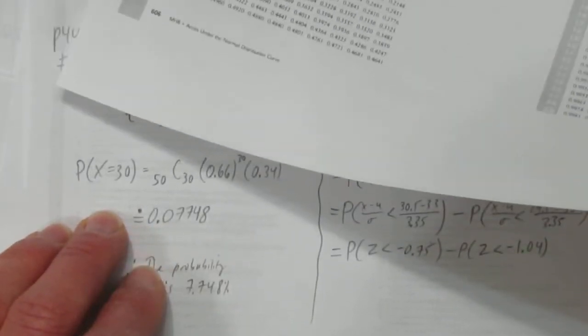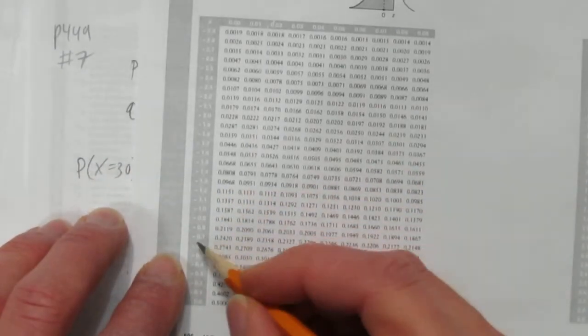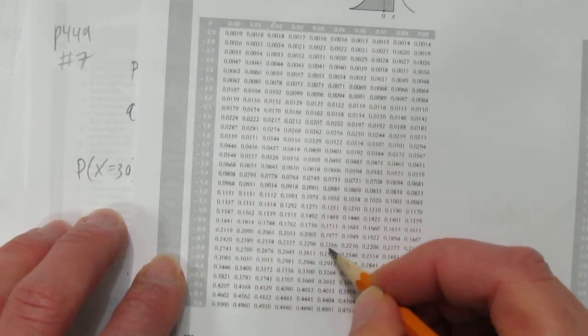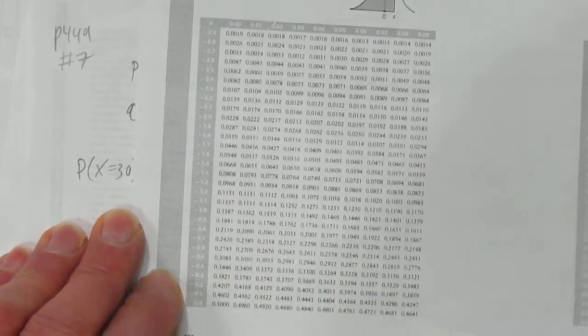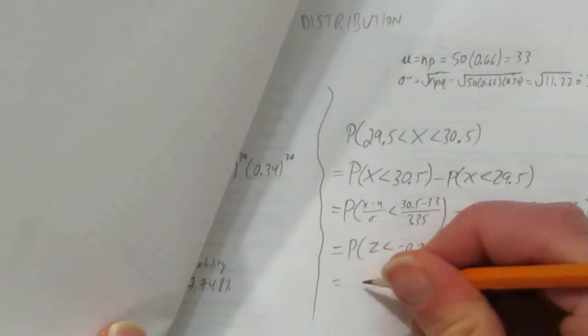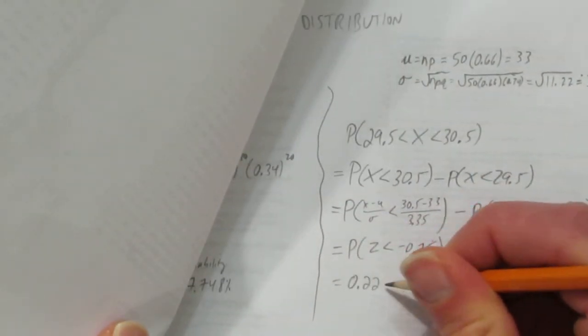Okay. So we're going to look up this z-score, this z-score, and then we're going to subtract. So what is the probability of being less than negative 0.75? So negative 0.75 is 0.2266, which equals 0.2266.